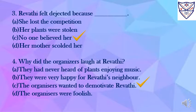Fourth, why did the organizers laugh at Revati? A. They had never heard of plants enjoying music. B. They were very happy for Revati's neighbor. C. The organizers wanted to demotivate Revati. D. The organizers were foolish. And the answer is C — the organizers wanted to demotivate Revati.